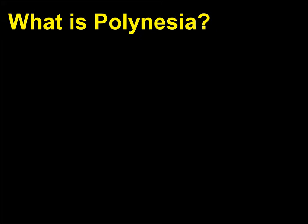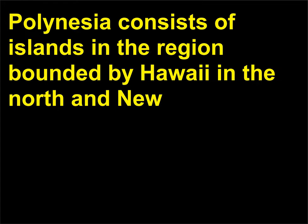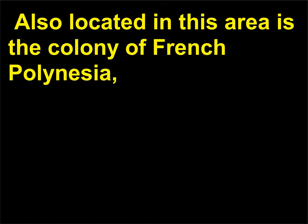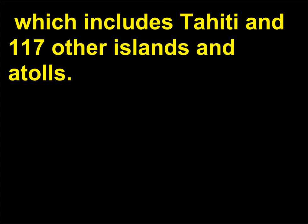What is Polynesia? Polynesia consists of islands in the region bounded by Hawaii in the north and New Zealand in the southwest. The region includes the countries of Samoa, Tonga, and Tuvalu. Also located in this area is the colony of French Polynesia, which includes Tahiti and 117 other islands and atolls.